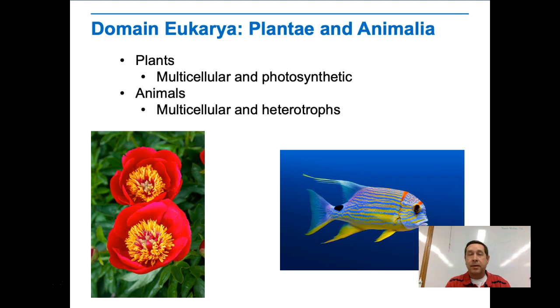Animals are multicellular heterotrophs, and at some point in their life cycle, they move — not always in the adult form. Sometimes it's the larval form that moves, like with coral. But at some point in their life cycle, they are capable of moving.